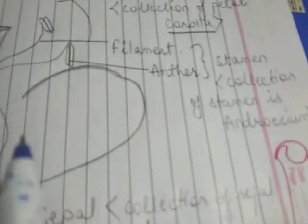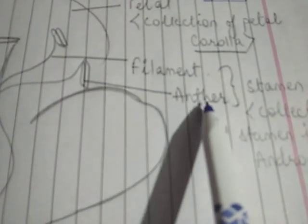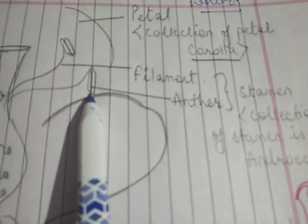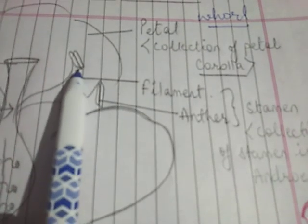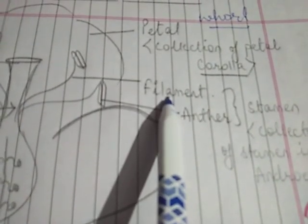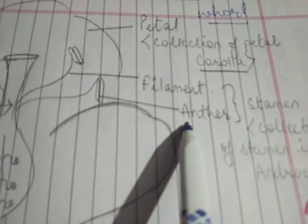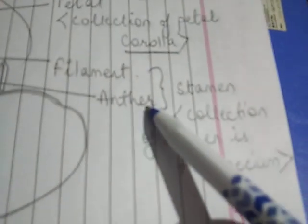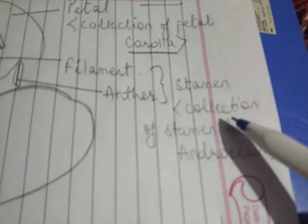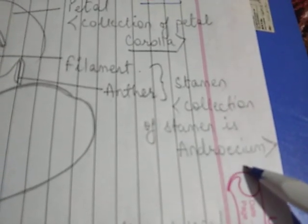The line seen in between is called placenta. The ovules are attached to this placenta and take their nourishment from it. Coming towards the male part of a flower, we have the anther, which is a bi-lobed structure. Below the anther, every anther has a long stick-like structure called filament. Anther and filament together are known as stamen. The collection of many stamens is called androecium, which is the male part of a flower, while gynoecium is the female part.